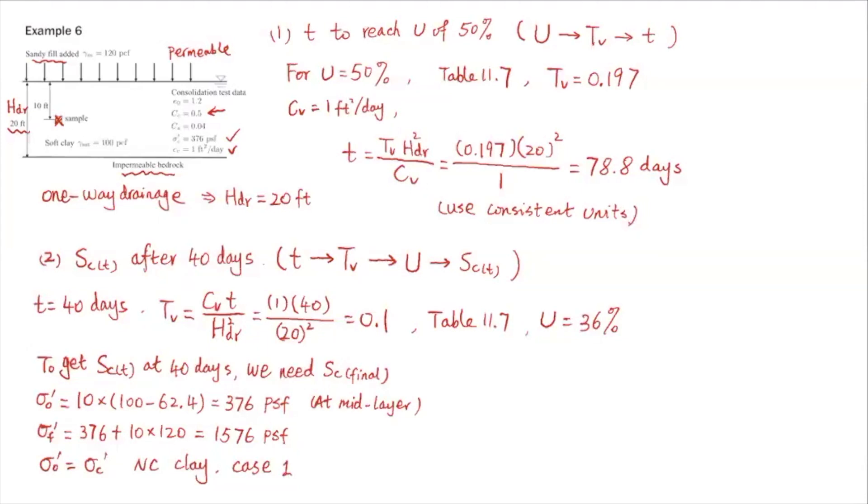In our lecture notes, we call this case one, NC clay. We're going to use the compression index Cc to do the final settlement calculation. Cc is 0.5. So Sc final, the final consolidation settlement, is H over 1 plus e naught, which is 1.2. Initial void ratio is 1.2. Thickness of the consolidating layer is 20. Cc is 0.5. And log 10 of sigma final over sigma naught: 1576 over 376.